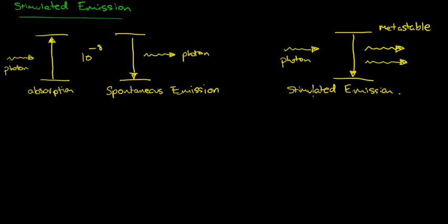We're talking about stimulated emission with lasers. We have a photon incident on an atom that is in a metastable state. That stimulates that atom to emit a photon, but of course we have this extra photon here. Not only do we have a transition to the ground state and thereby procuring a photon — we had this incident photon which must also be emitted. Those two photons are in phase and they are exactly the same energy as the original photon.